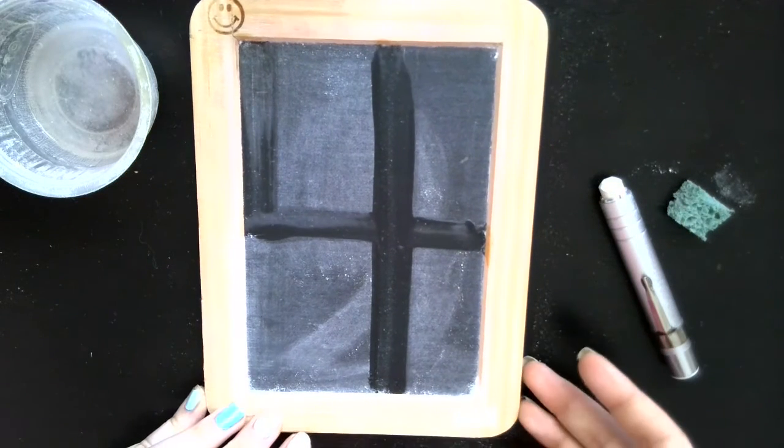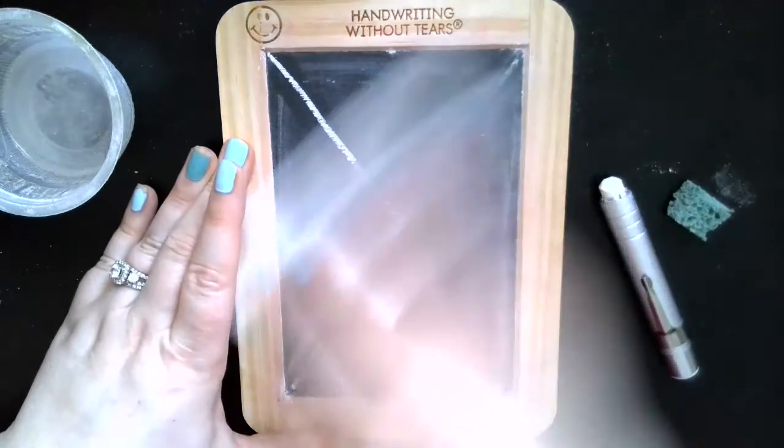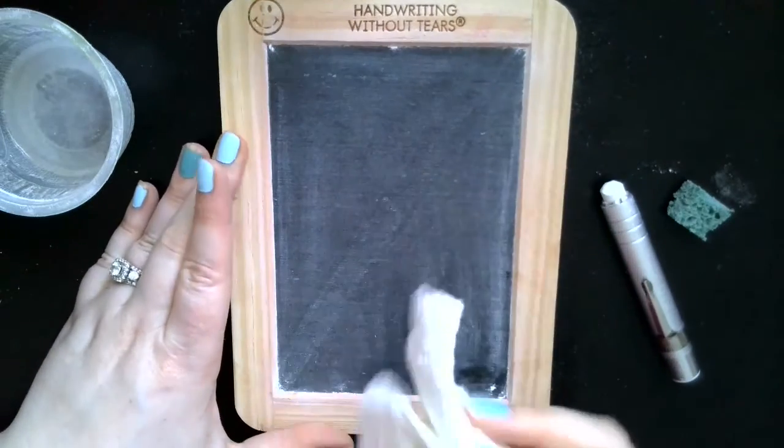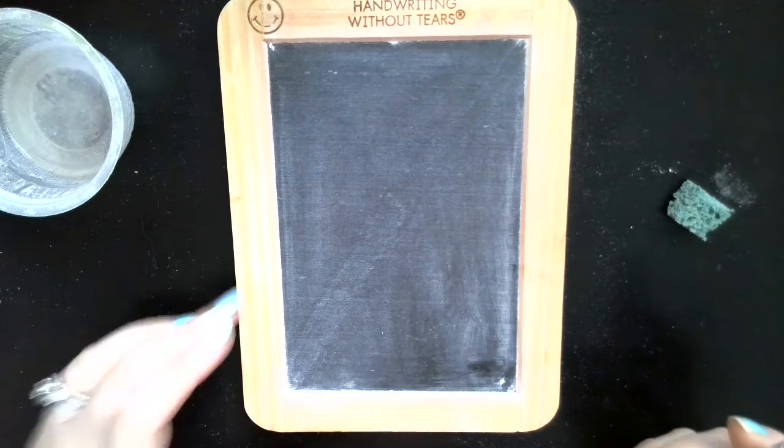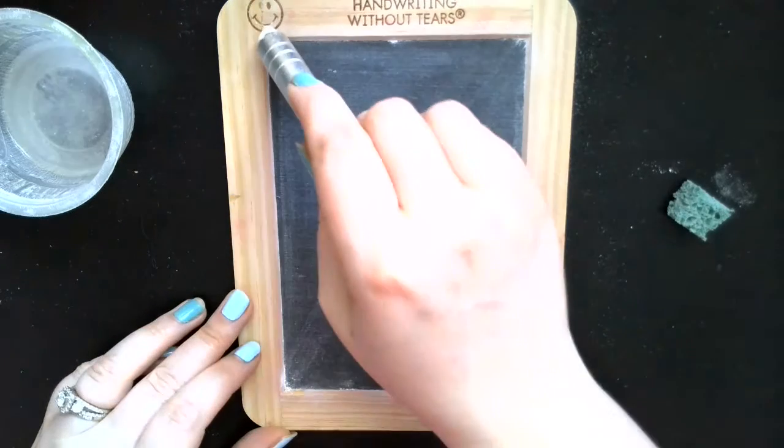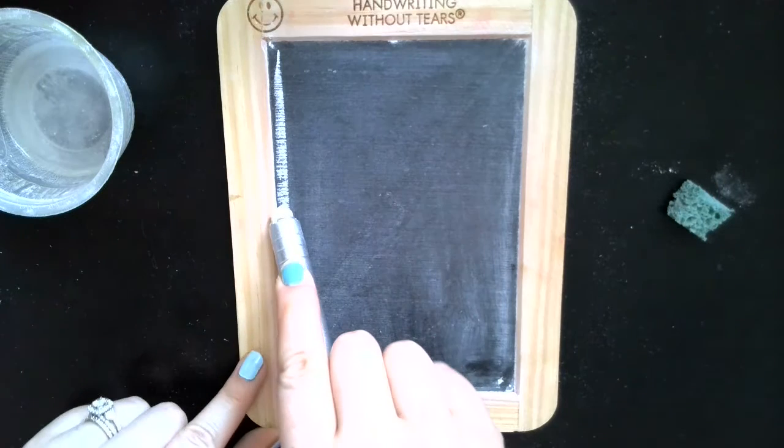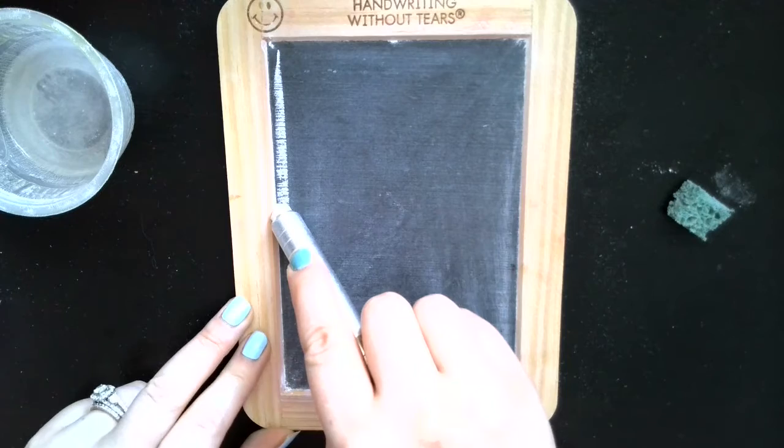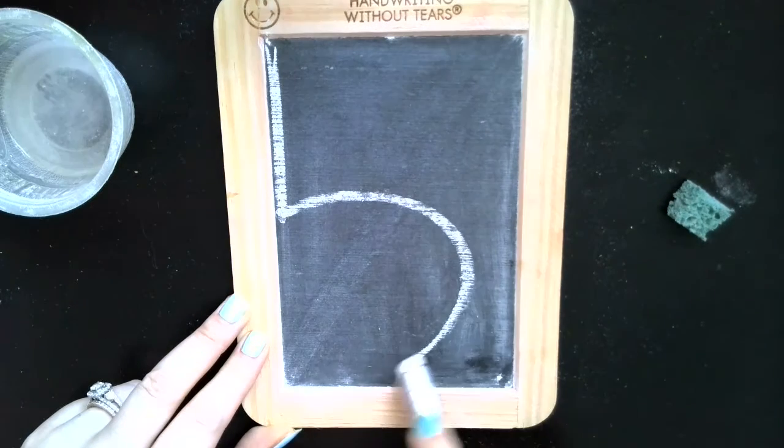Now the next number that we need to draw is the number five. Whoops! I clearly have not cleaned off my board. And the number five is a tricky tricky one but let's follow these directions together. So number five we start with a small line. We're going to do a small line coming down from the happy face to the middle just like our four and stop. Now we're going to do a little curve. So we do a little line down and a little curve around.